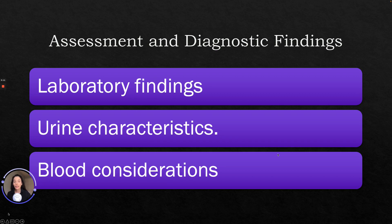Assessment and diagnostic findings include laboratory findings such as elevated potassium, serum lactate, and blood urea nitrogen levels. We may see urine characteristics such as increased urine specific gravity and osmolarity. We may also see a decrease in blood pH and partial pressure of oxygen, and an increase in partial pressure of carbon dioxide.